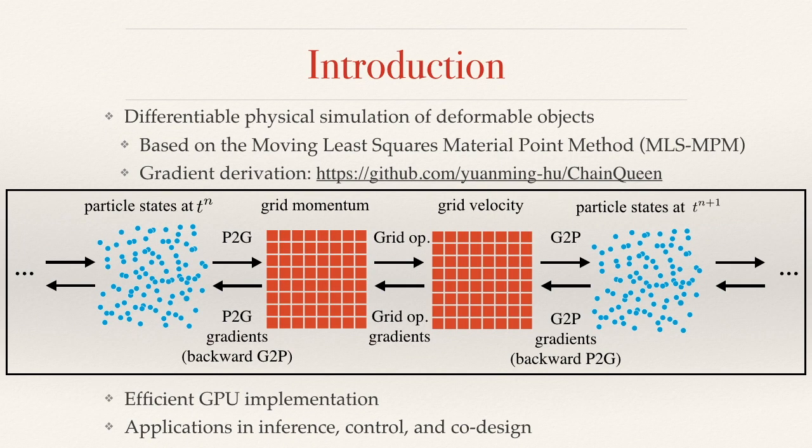Chain Queen is based on the recently proposed Moving Least Squares Material Point Method, which uses both particles and grid nodes for discretization in simulating deformable objects.